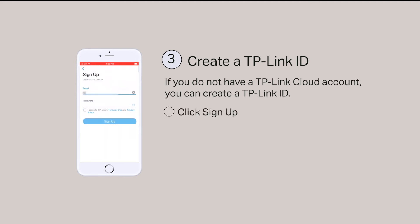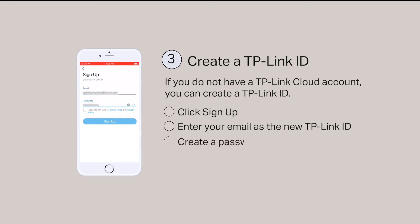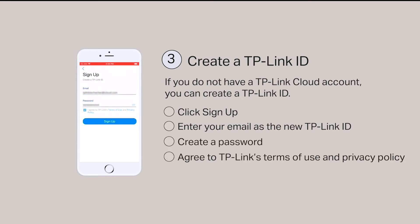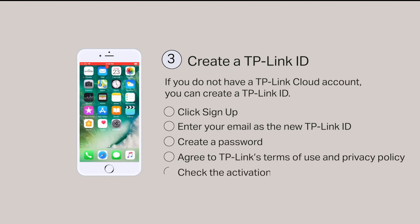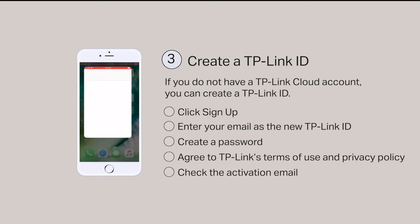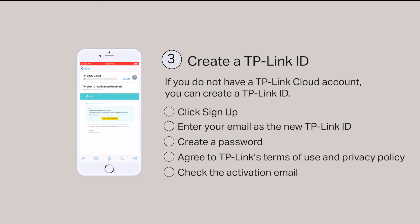Click on Sign Up. Enter the email address you'd like to use for your TP-Link ID and create a password. Now click the check box and click on Sign Up. You will receive an activation email. Check the email and click to finish registration.